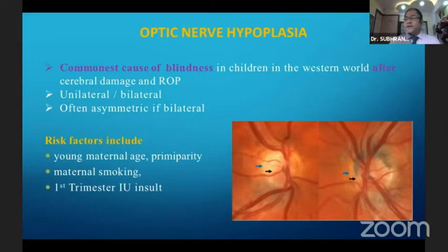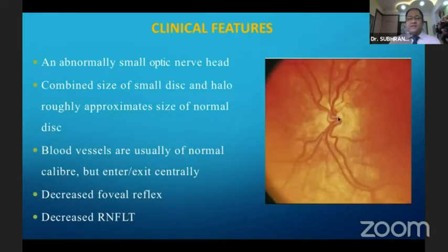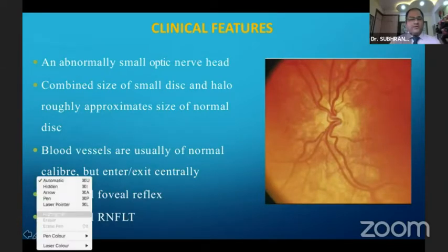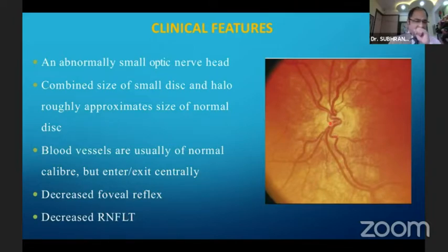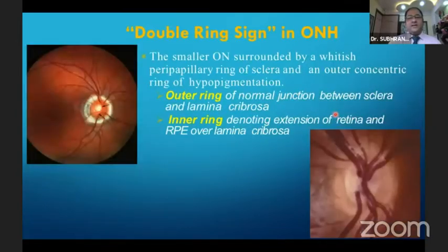Risk factors include young maternal age, primiparity, and first-trimester intrauterine insult. Clinically, we get an abnormally small optic disc. The combined size of the small optic disc and the halo around it approximates the size of a normal disc. Blood vessels are usually of normal caliber — they might be tortuous, but in most cases they exit centrally. We might also have decreased foveal reflex and decreased nerve fiber layer thickness.